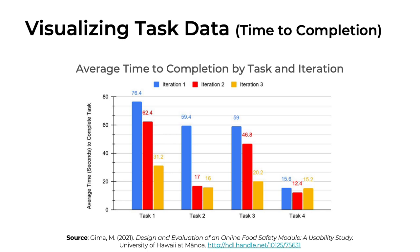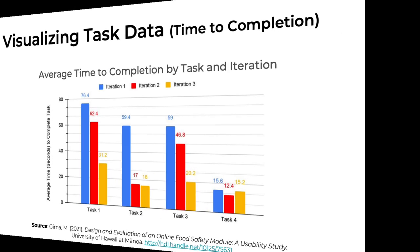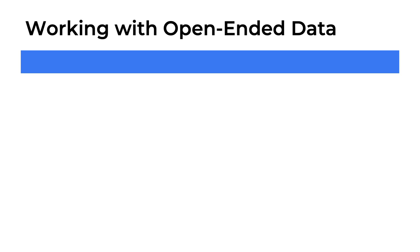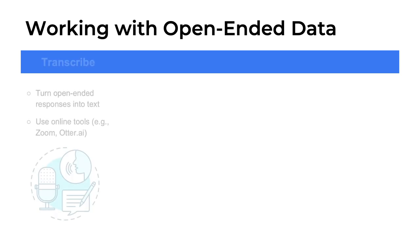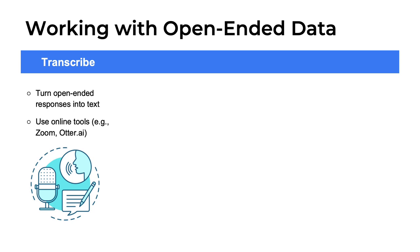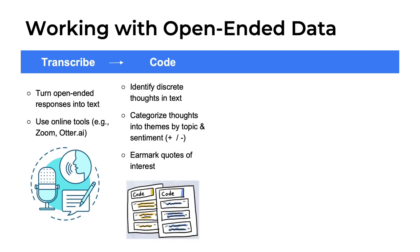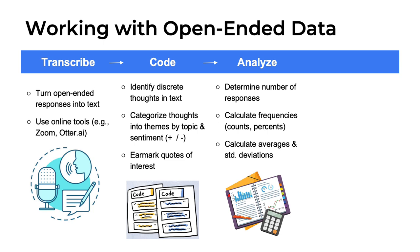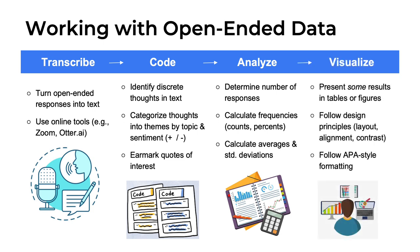So far we've talked about Likert-scale data and task-specific data. Now let's talk about open-ended data. Open-ended data comes from open-ended questions, which are questions that cannot be easily answered with a yes or no response — they usually require a longer written or oral response. Working with open-ended data is a four-step process. First, we need to transcribe the data, turning video or audio recording into written text. The second step is to code that data by identifying discrete thoughts and categorizing them by theme and sentiment. The third step is to analyze that data. And the fourth step is to visualize the results using tables or figures.